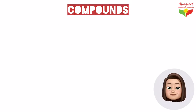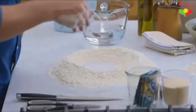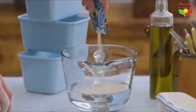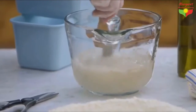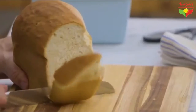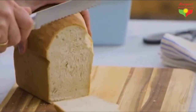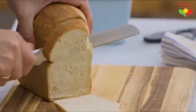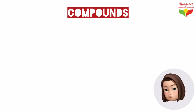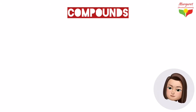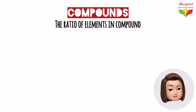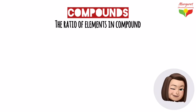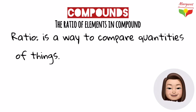Did you know that recipes for bread and all baked goods are recipes for chemical reactions? Any change to the ingredients or the ratio of ingredients will cause your loaf of bread to come out as a dark brick. Baking is chemistry, and it makes sense that ratios are important in chemical formulas for compounds. Let's dig deeper into chemical ratios and see what we can figure out.